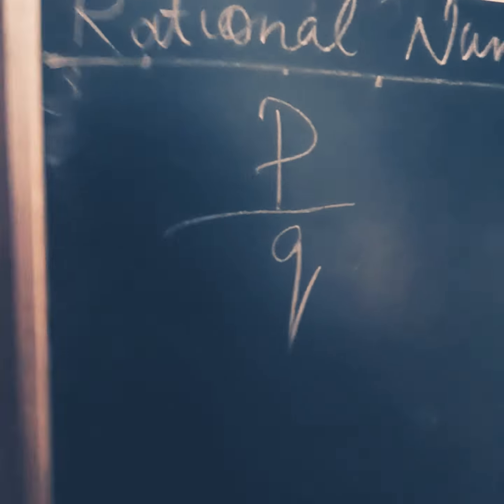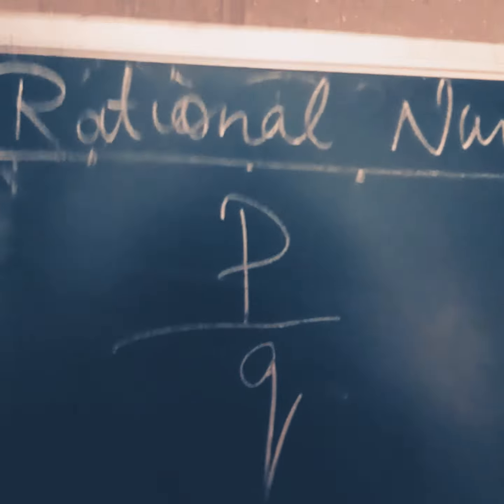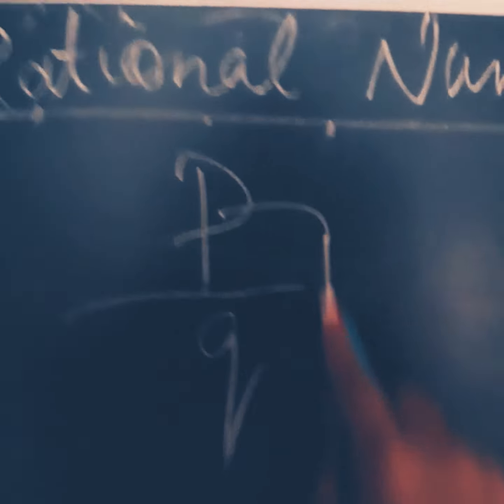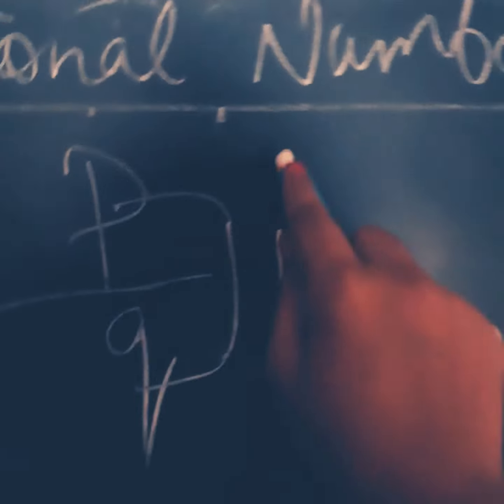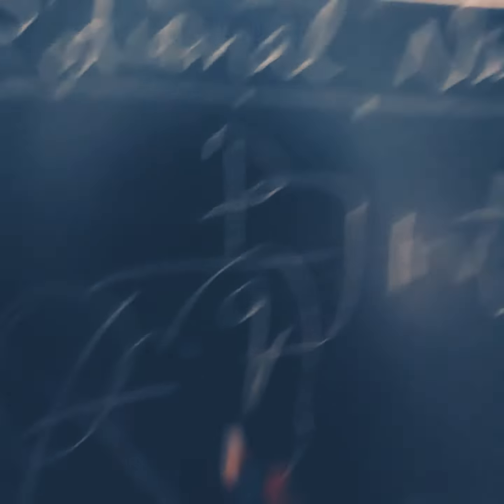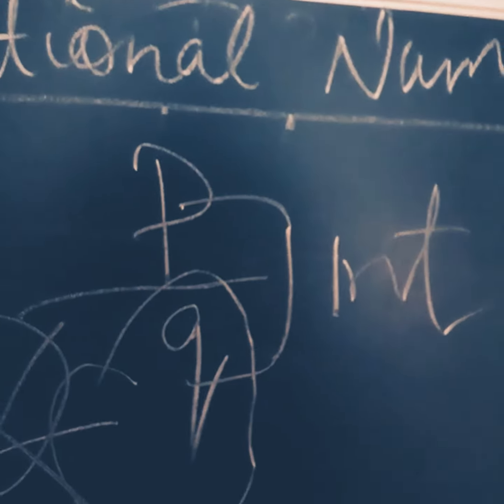What are rational numbers? Rational numbers should be in the P/Q form. They must be integers, and the denominator should not be 0 at any cost. The numerator can be positive or negative, but these are integers.